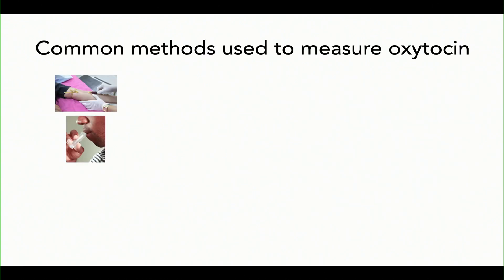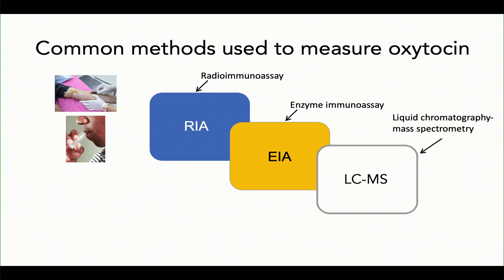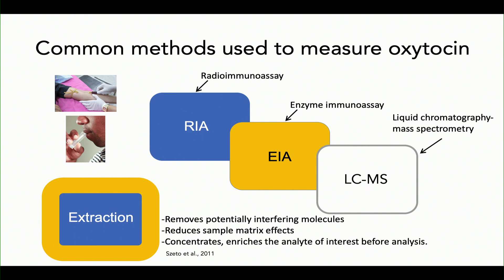Common methods to measure oxytocin include blood and saliva measurements. There's RIA (radioimmunoassay), EIA (enzyme immunoassay), and LC-MS (liquid chromatography mass spectrometry), which is the gold standard. All of these techniques can be used with an extraction procedure beforehand, which removes potentially interfering molecules, reduces sample matrix effects, and concentrates the analyte of interest. If you choose to extract, you'll end up with much lower levels; if you don't, you'll end up with much higher levels.